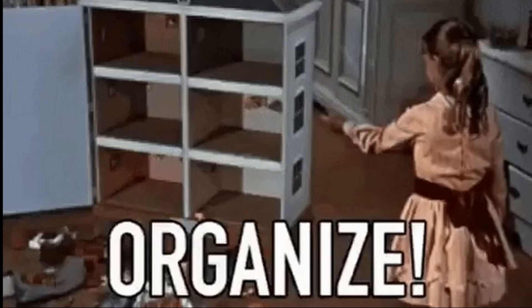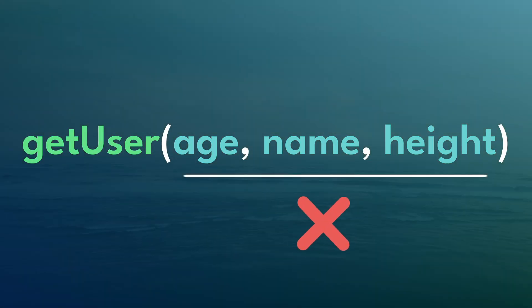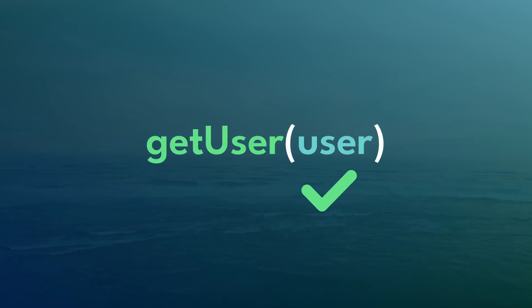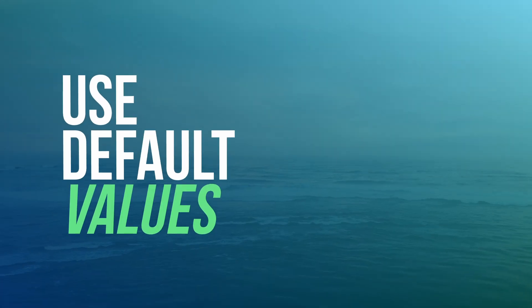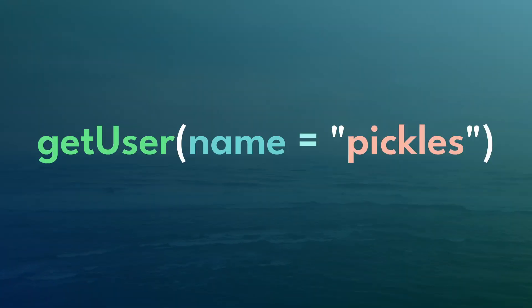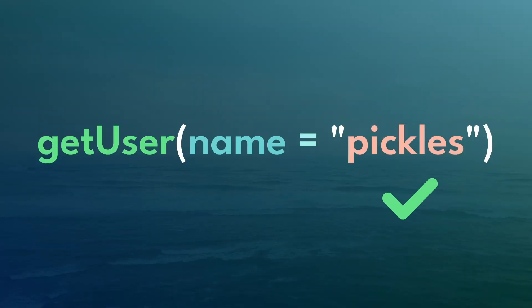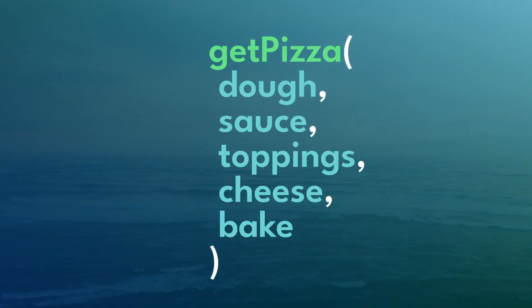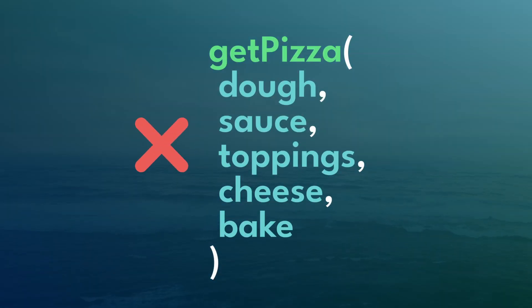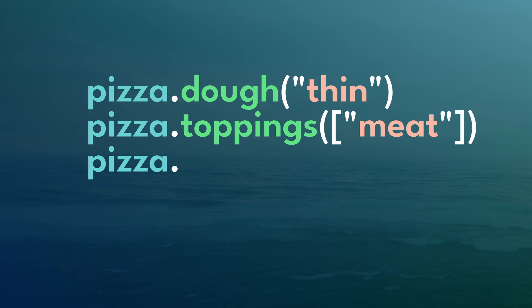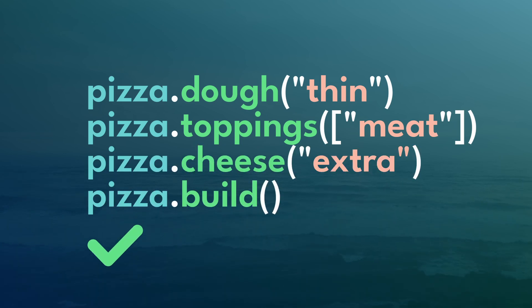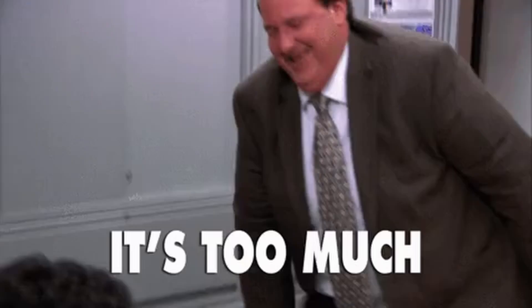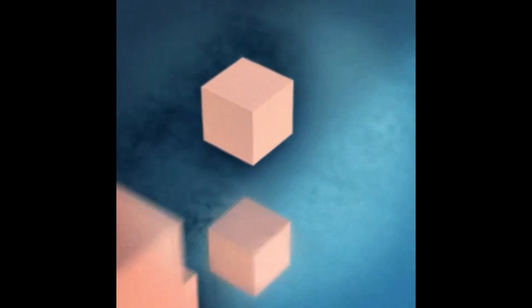Let's explore some solutions to make our functions cleaner and more organized. The first step is to group related parameters — just like organizing a closet, group similar items together. For instance, if you have parameters related to user details, group them under a single object or structure. Another handy trick is to use default values for parameters when it makes sense. Consider using the builder pattern, especially when dealing with complex objects — you can use it to slowly build up your end result with multiple functions. If all else fails, it might be a sign that your function is trying to do too much; consider breaking it down into multiple functions.